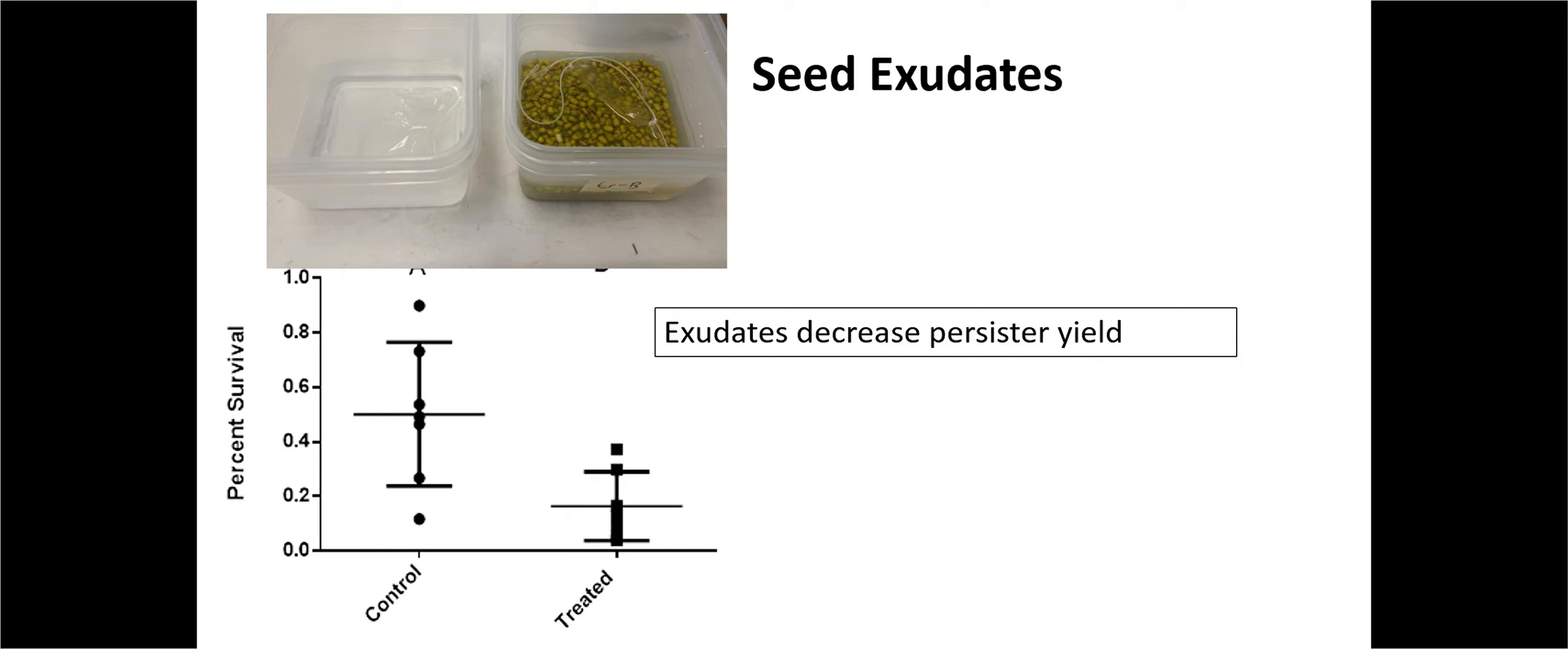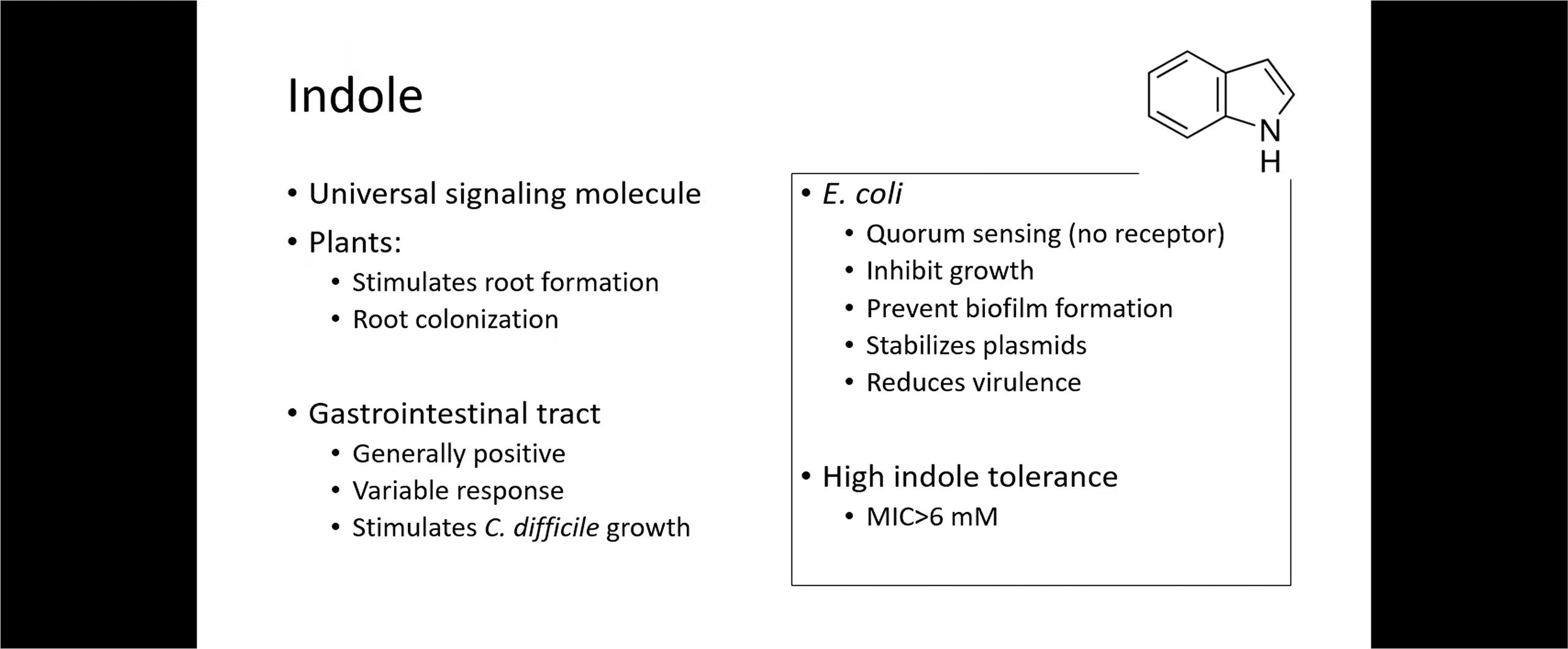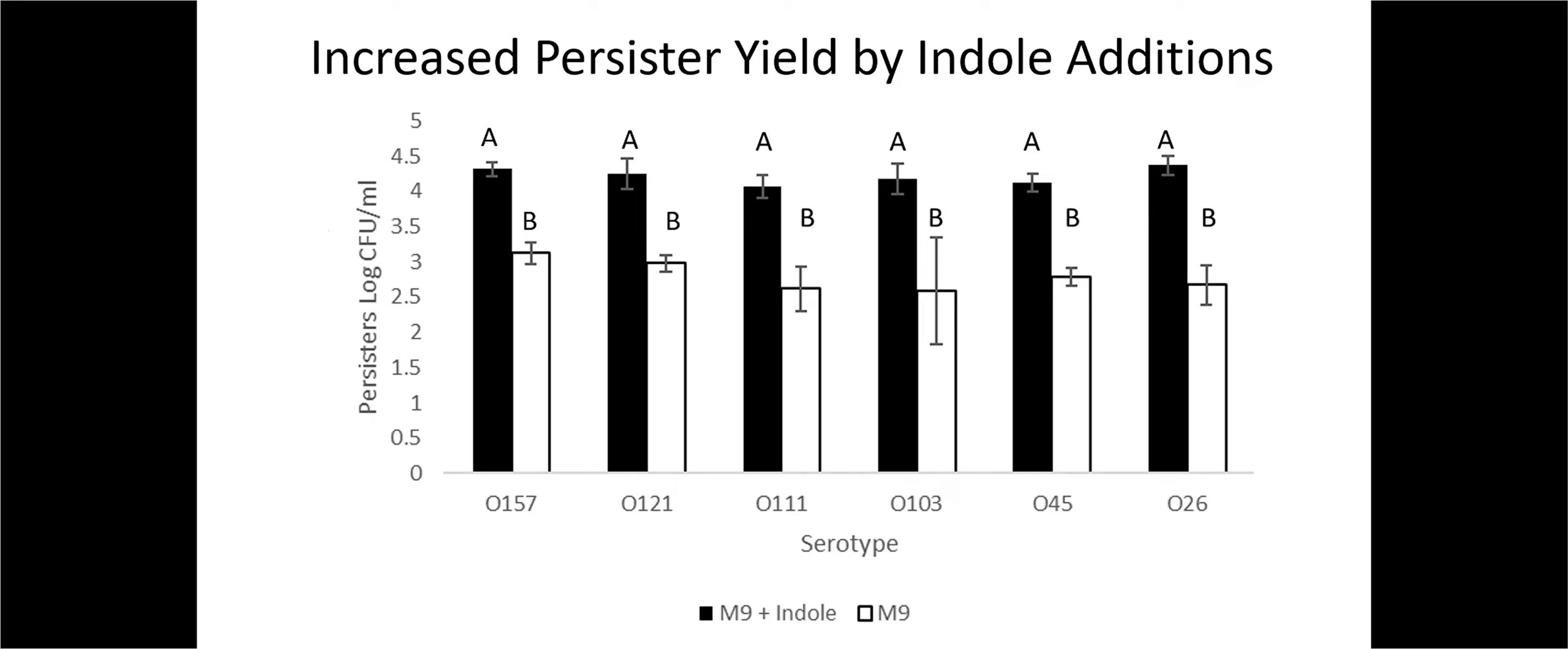We've done some work on it. I won't go through the details. We looked at different systems which could form persisters. We looked at sprouting seeds because sprouts and pathogens go together. We looked at E. coli and sprouts. We found that if you have a population of E. coli on germinating mung beans, they basically reduce the number of persisters by half. Then we looked at indole. Indole is this universal signal molecule. It stimulates roots, root colonization, stimulates Clostridium difficile. But in E. coli, it does the opposite. It inhibits growth. It stabilizes all the cell structures like plasmids, reduces its virulence. It basically makes it into stasis. And sure enough, when we look at indole, it does increase the persisters.